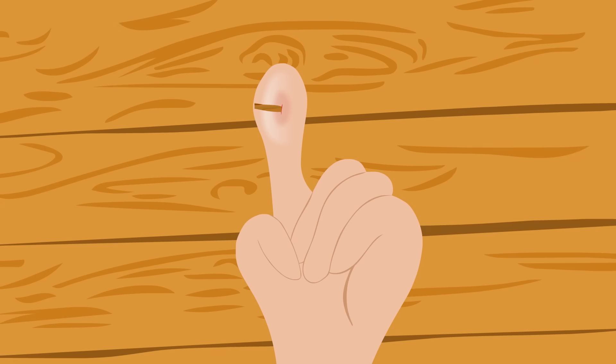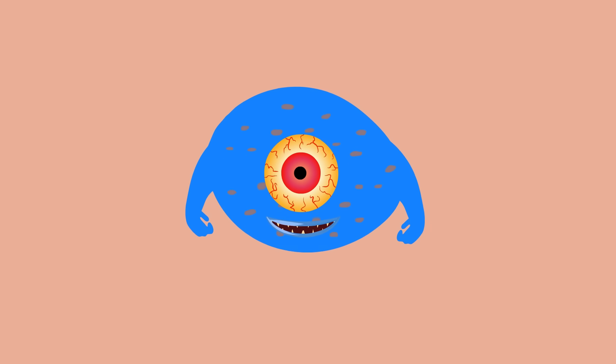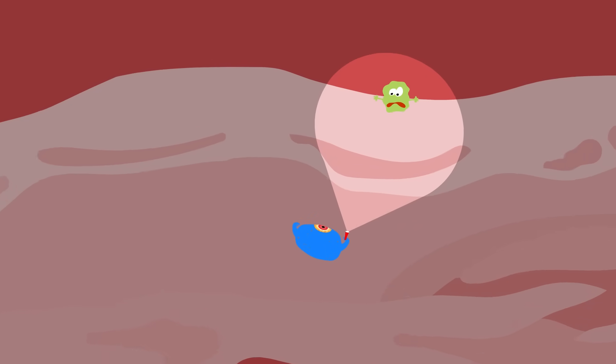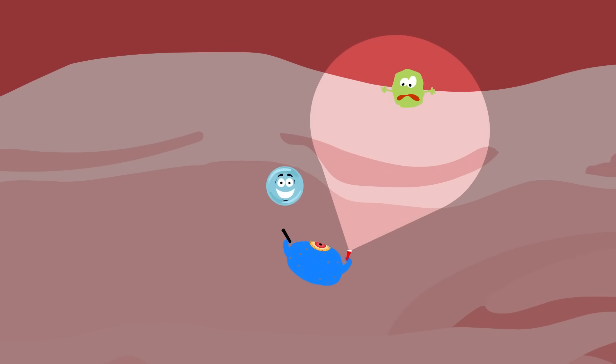The next line of defense is inflammation, which is done by mast cells. These cells are constantly searching for suspicious objects in the body. When they find something, they release a signal in the form of histamine molecules.